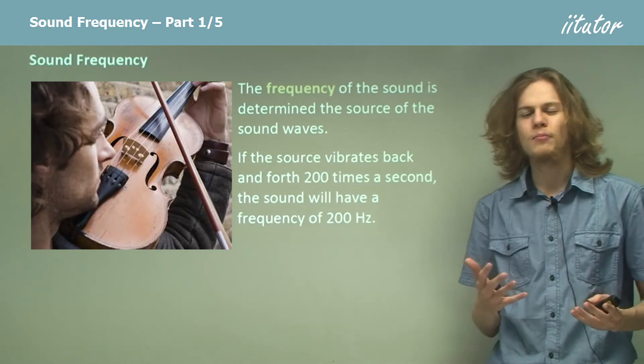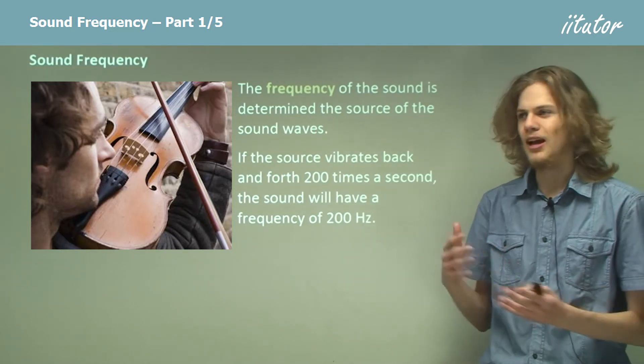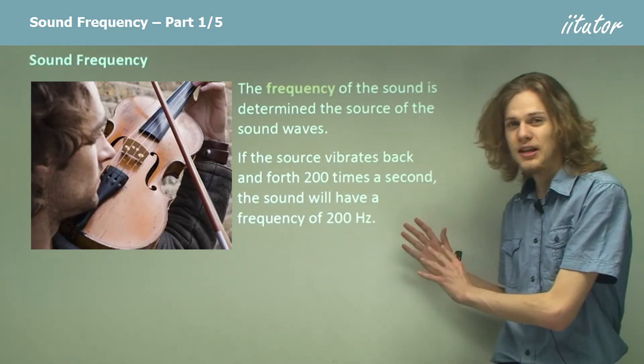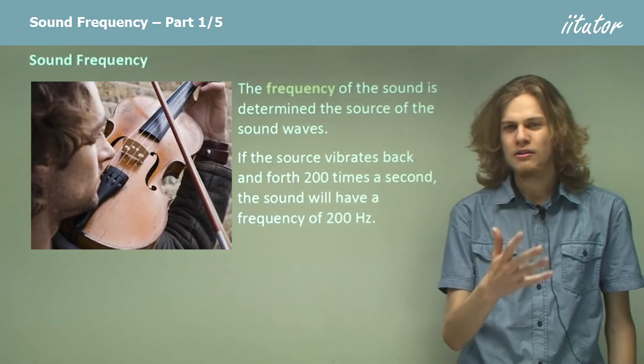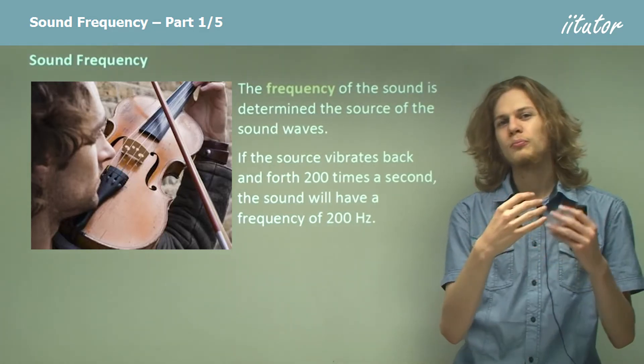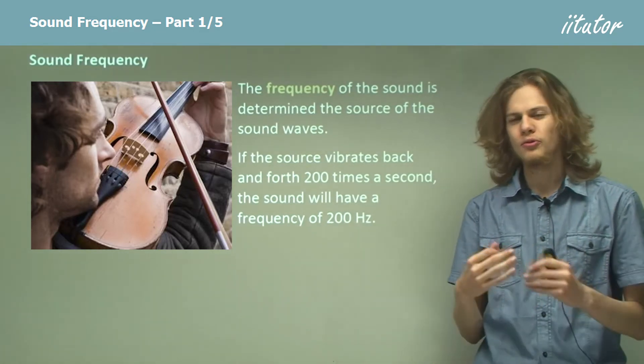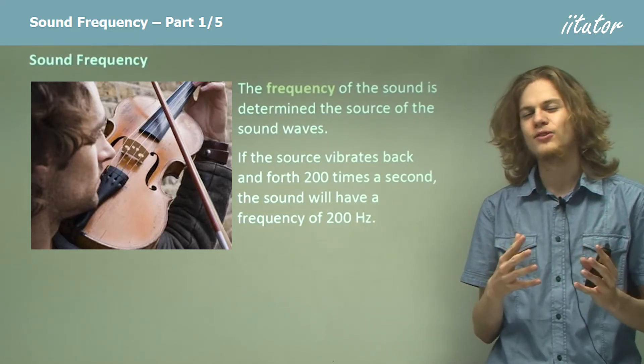So if the source vibrates back and forth, as an example, 200 times a second, then that means that the wave will have 200 complete waveforms or 200 complete wavelengths every second.